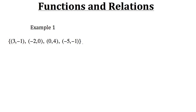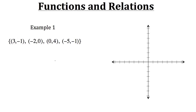Now let's try plotting this relation on a graph. First we have the ordered pair (3, -1), so let's go over to three along the horizontal axis and then negative one on the vertical axis. We do the input first along the horizontal axis and then the output along the vertical axis. We'll label that point (3, -1).